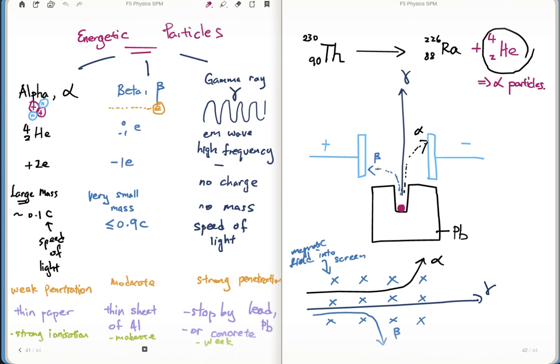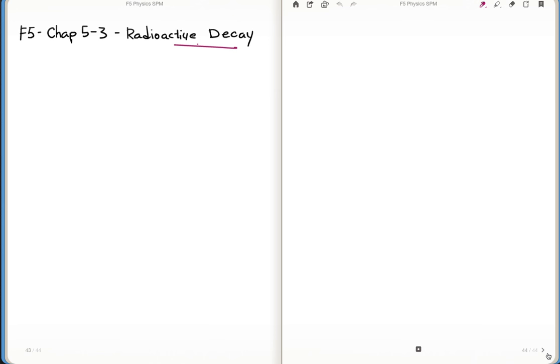I've also gone through with you the effect of electric field on energetic particles. You need to make note of the angle of deflection - alpha has the smaller angle deflection because of its heavy mass, followed by the effect of a magnetic field. In this video I'm going to go through the decay in general form. There are three types: alpha, beta, and gamma.